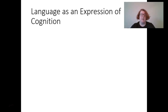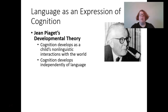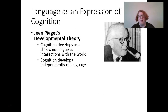So, language as an expression of cognition. In Piaget's developmental theory, he believed that cognition develops through a child's non-linguistic interactions with the world — that cognition is really separate from language. We can develop our understanding of the world separately from learning the words that describe it. We can understand gravity without knowing the word 'gravity,' understand that a spoon always falls to the floor, or understand fluffy animals without knowing the words 'cat' and 'dog.'